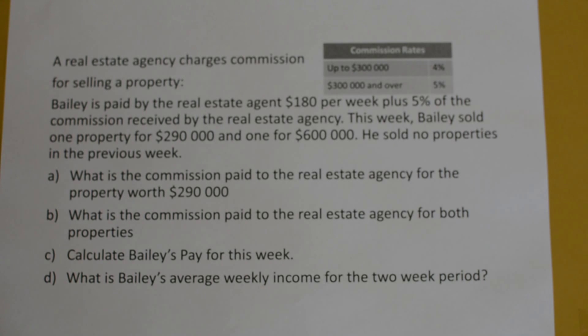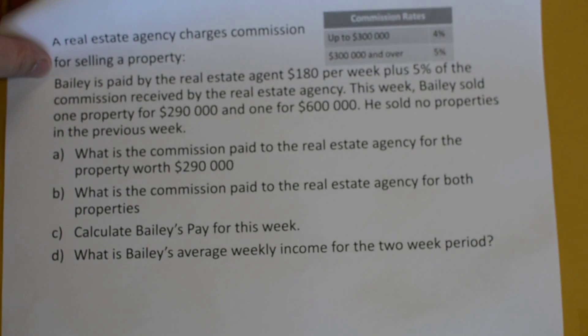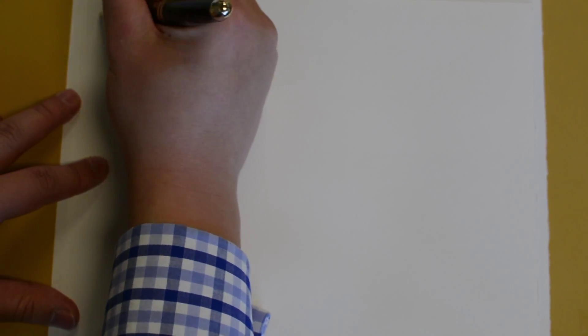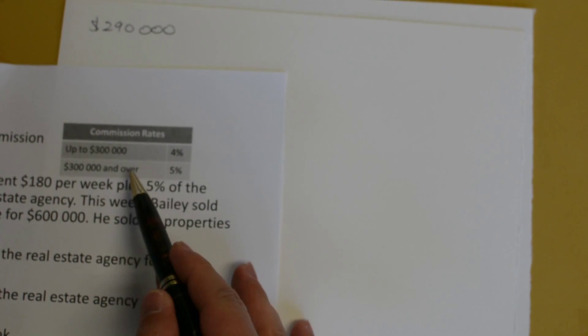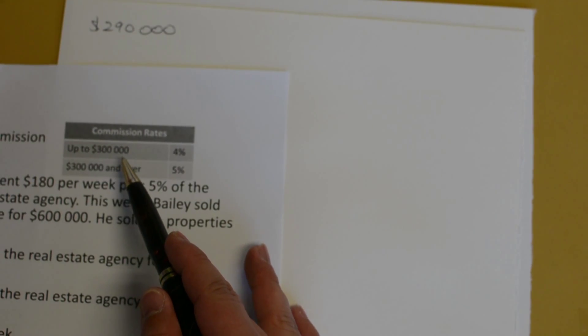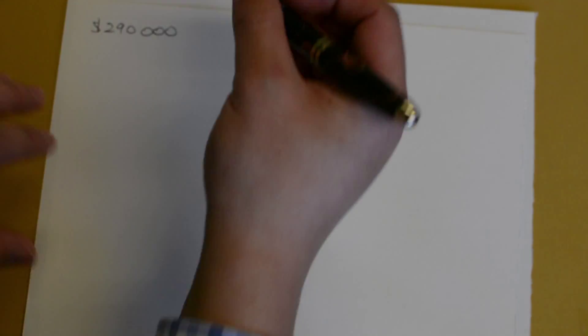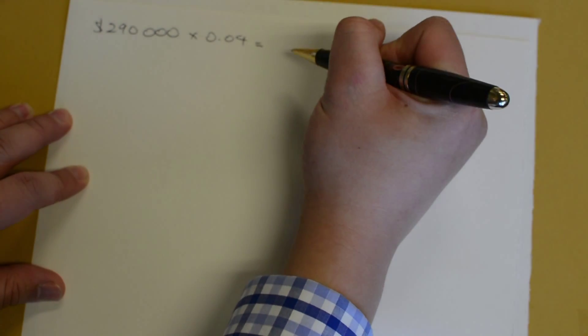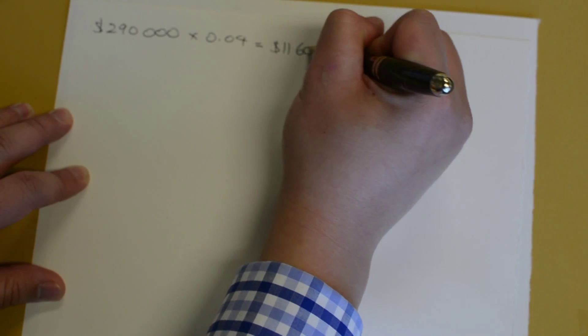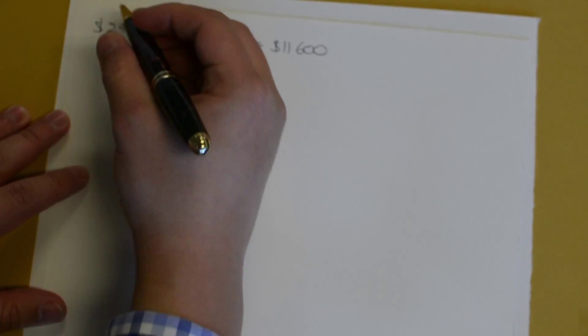He sold no properties in the previous week. Part A: what is the commission paid to the real estate agency for the property worth $290,000? Since $290,000 is less than $300,000, the table tells us to use the 4% commission rate. So we multiply by 0.04, and that gives us $11,600.